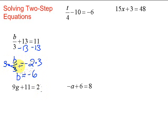Remember, anytime we solve an equation we can always go back and check to make sure it works. If we take negative 6 and put it back in for b: negative 6 divided by 3 is negative 2, plus 13 gives us 11. Sure enough, that's 11, so it works. You can always check your answer — there's no real good excuse for getting these types of problems wrong. Let's take a look at another example.